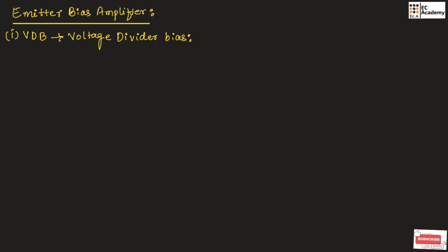In the previous lectures, we understood about base bias amplifier. In base bias amplifier, the Q point was unstable. That's why we will go for emitter bias amplifier, which has a more stable Q point compared to base bias amplifier. There are two types of emitter bias amplifier: first is voltage divider bias and second is two-supply emitter bias. In this lecture, let us understand about the voltage divider bias circuit.